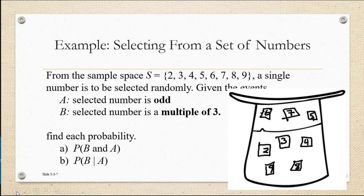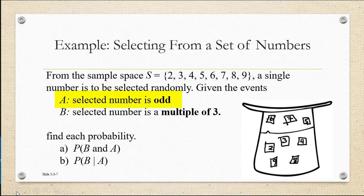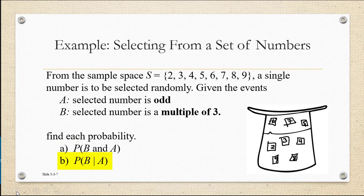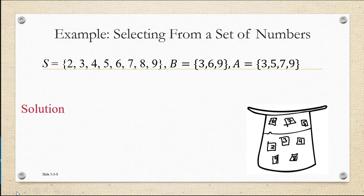We're going to define the events A and B as follows. A is the event that the number we pull out of the hat is odd, and B is the event that the number is a multiple of 3. The probabilities we're interested in calculating are the probability of B and A happening, and the probability of B given that A has occurred. So B contains 3, 6, and 9, and A contains 3, 5, 7, and 9.